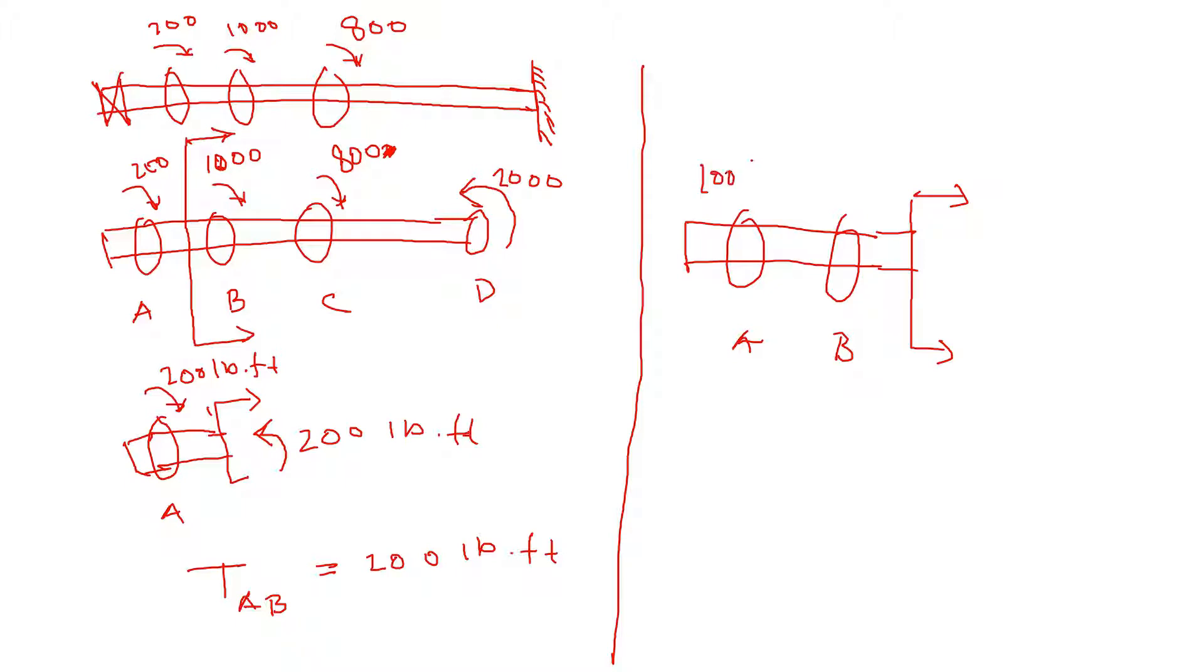So that's 200 clockwise. That's 1,000 pound feet clockwise. So to balance this, I need to apply 1,200 anticlockwise. So torque between B and C will be 1,200 pound feet anticlockwise like that.